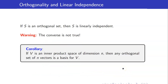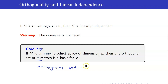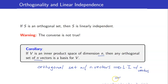What is a corollary of this? If we have an inner product space of dimension n and an orthogonal set consisting of n vectors, it will automatically be a basis for V. Because the orthogonal set is linearly independent, and a linearly independent set with n vectors where n is the dimension of V is automatically a basis.